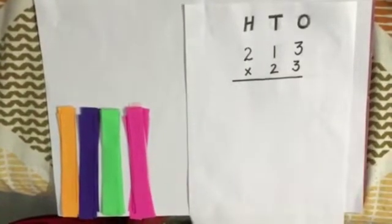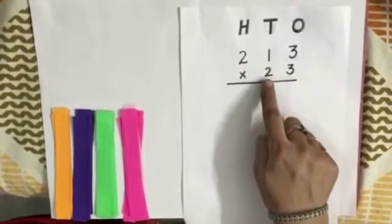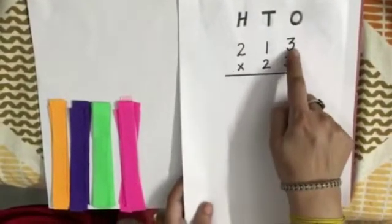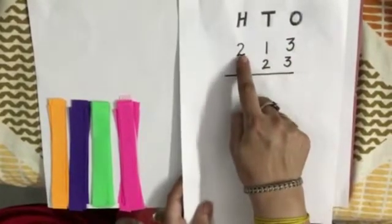Now we have to multiply 213 by 23, a 3-digit number by a 2-digit number. So, 3 ones, 1 ten, and 2 hundreds.